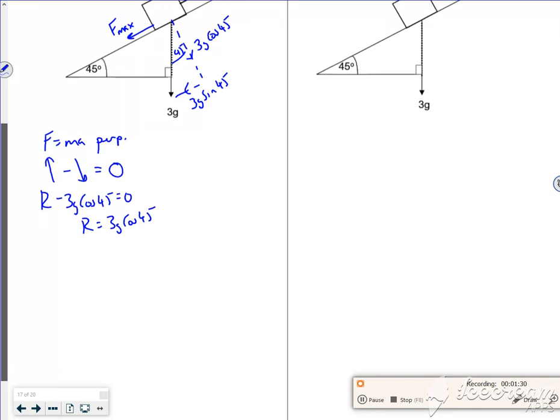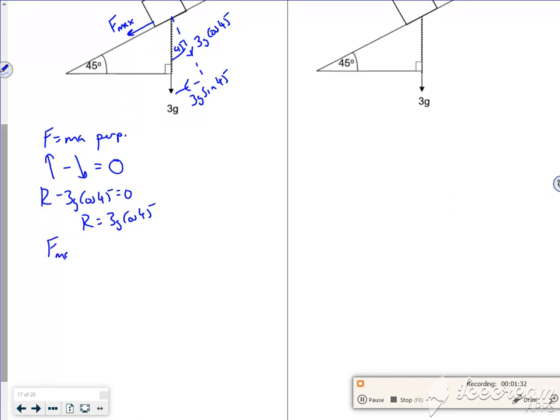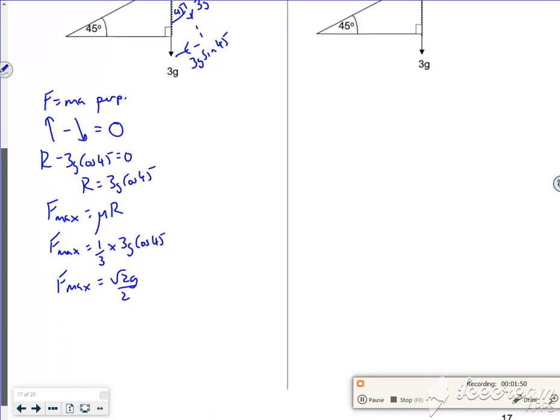Let's move that up. F max, mu R. Mu is a third. F max is a third of 3g cos 45. So if you put that in the calculator, it gives you root 2g over 2, because cos 45 is root 2.